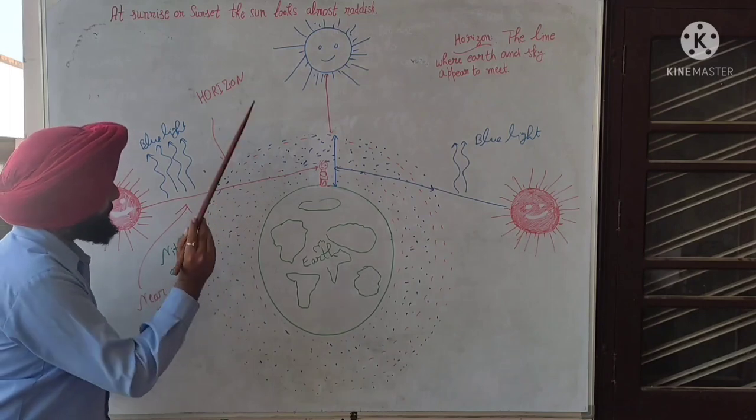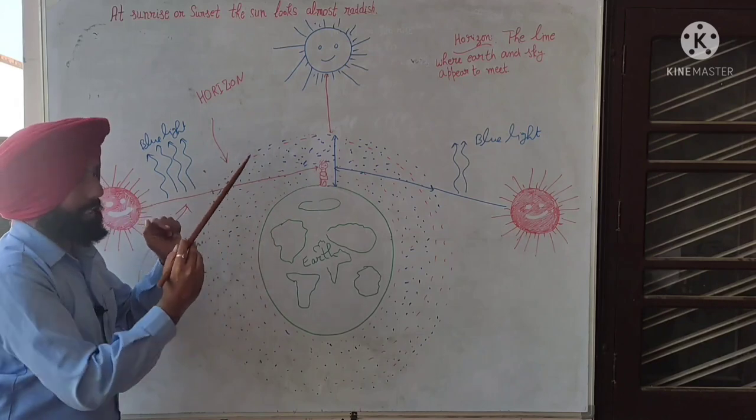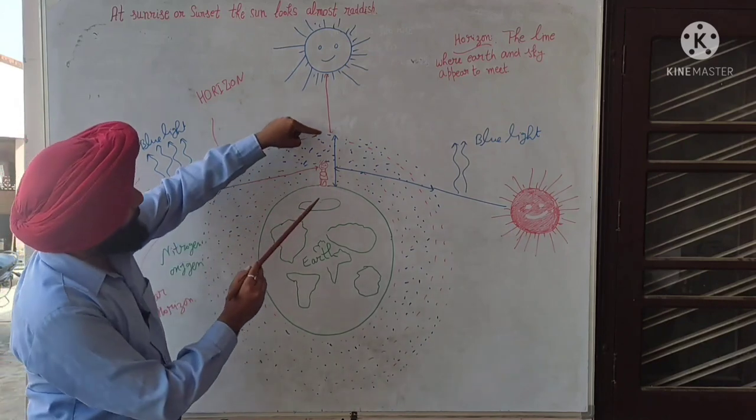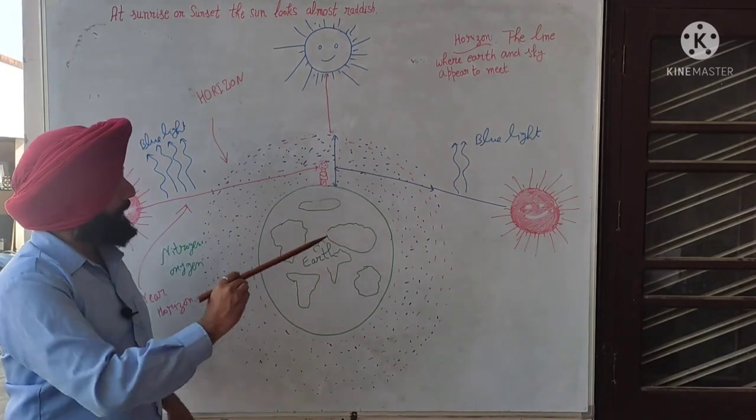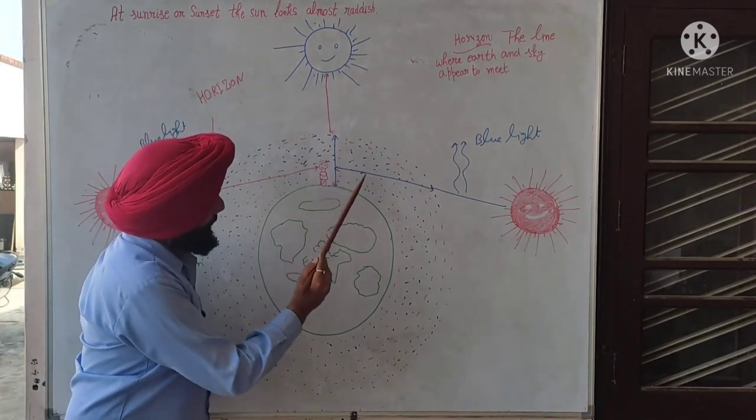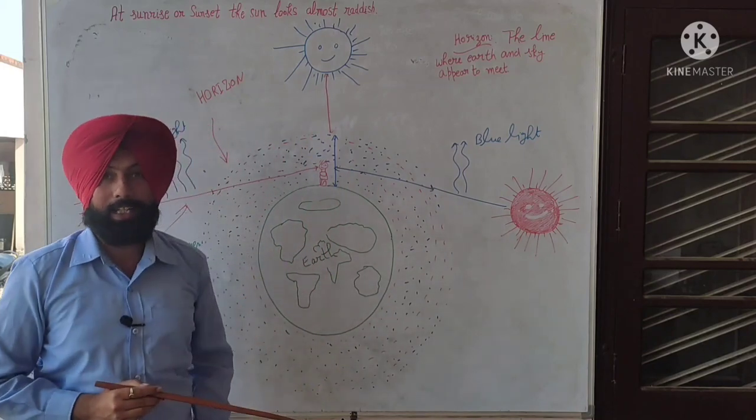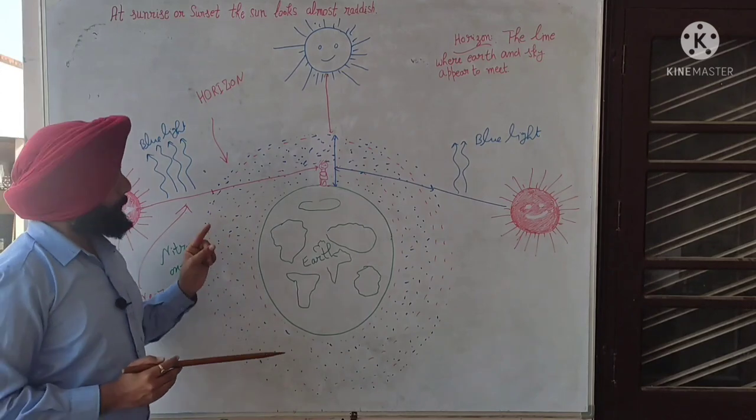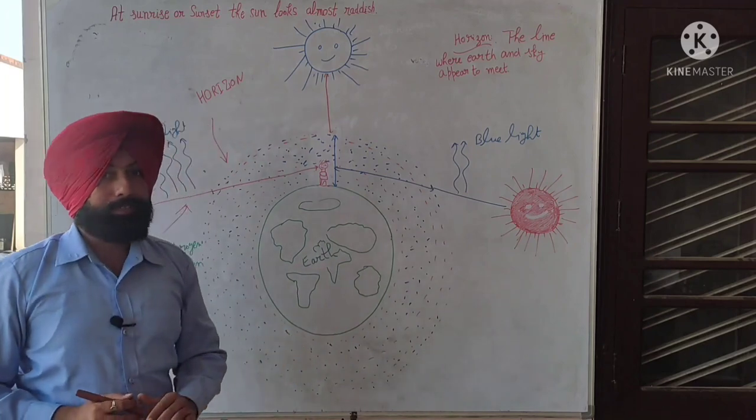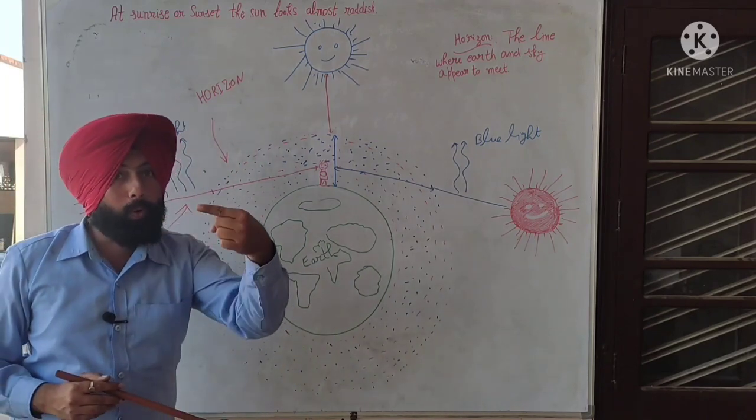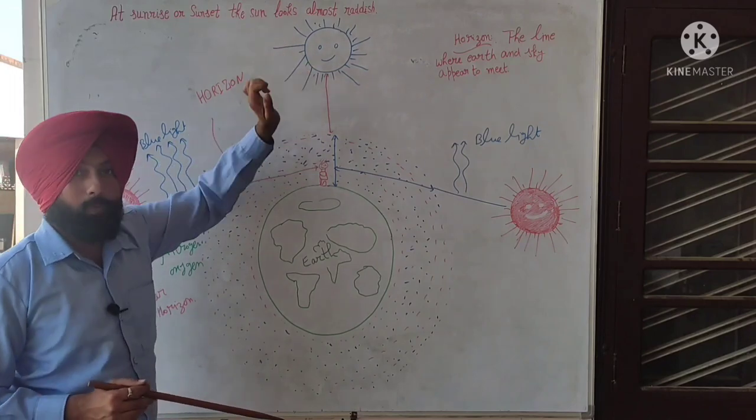The distance light travels as compared to when the sun is overhead. And similarly when sunset is happening, then this length is also greater. So the light during sunrise and sunset travels more distance as compared to when the sun is overhead.